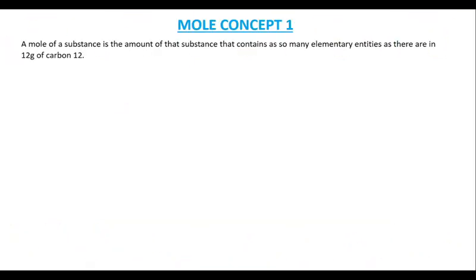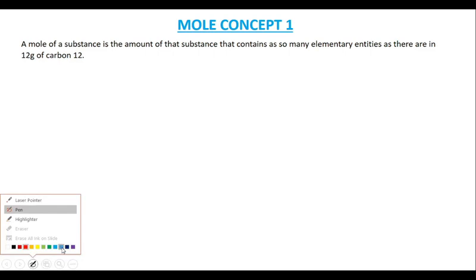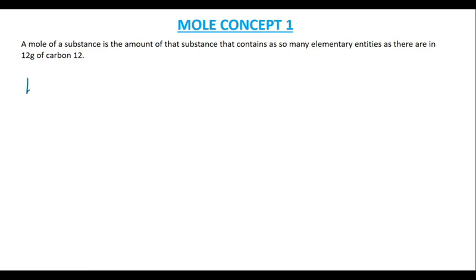We want to start by knowing the definition of mole. A mole of a substance is that amount of the substance that contains as many elementary entities as there are in 12 grams of carbon-12. Every substance contains some entities which we are calling the elementary entities, and this number of entities is known as Avogadro's number or Avogadro's constant, given by L, which is equal to 6.02 times 10 raised to the power 23 entities.